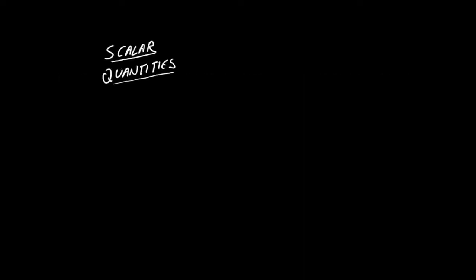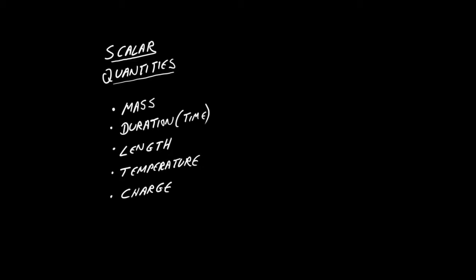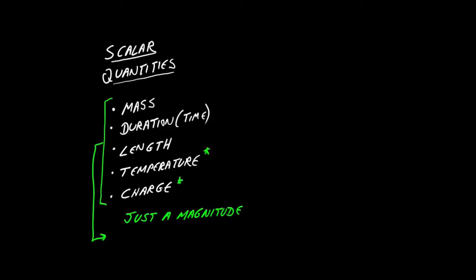Let's list some scalar quantities. Think about mass, duration, length, temperature, charge. These physical quantities are all well described with a single number — really just a magnitude, although some may go negative, so it's a magnitude and a sign. But still, just a simple number is adequate to describe these things.